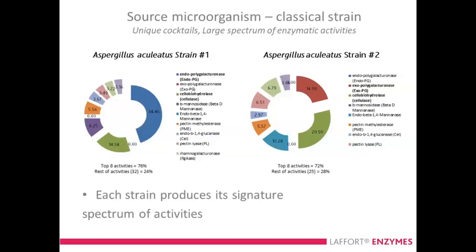There are also differences between strains within the same species of Aspergillus aculeatus — just like winemaking yeasts have different strains. Two strains might both have around 70-76% of the top eight activities and 24-28% of the rest, but with a very different breakdown of what specific activity each provides. If you think back to the drawing of the pectolytic chain, you know that different chains will require different enzyme strains.